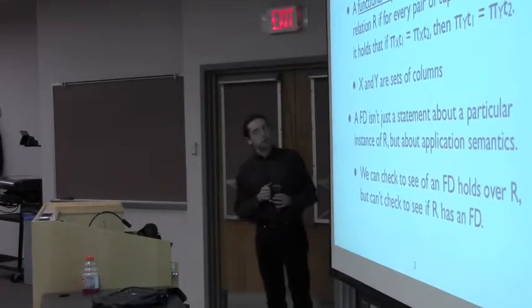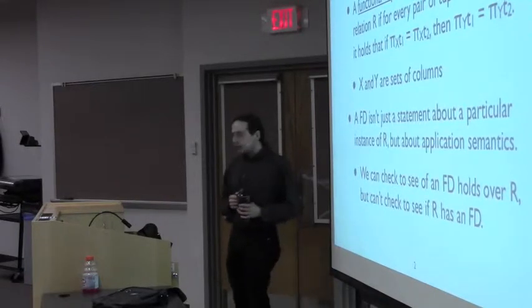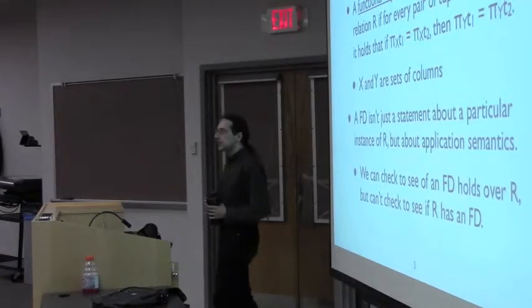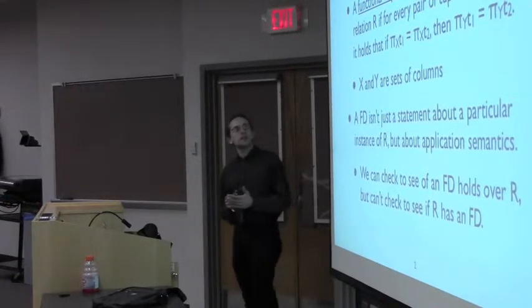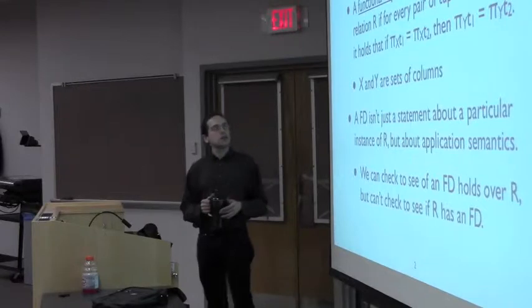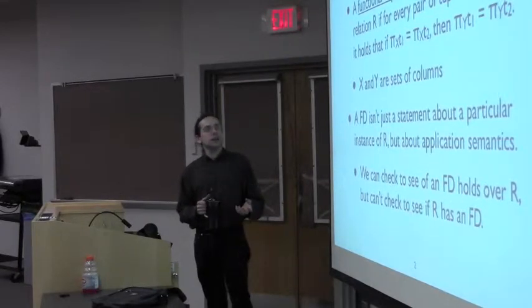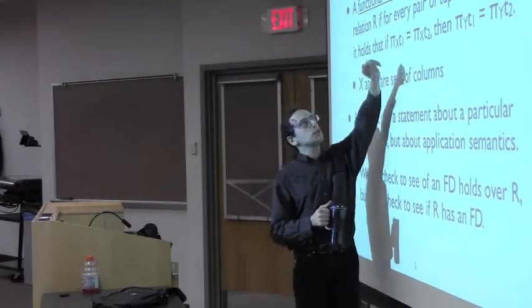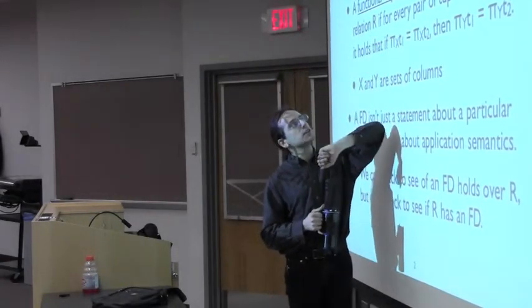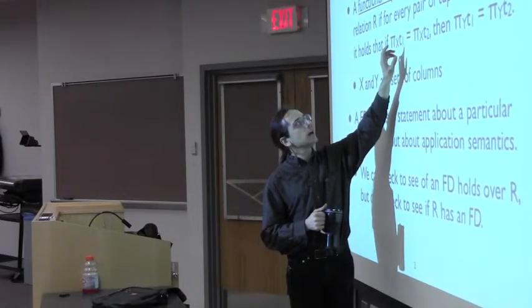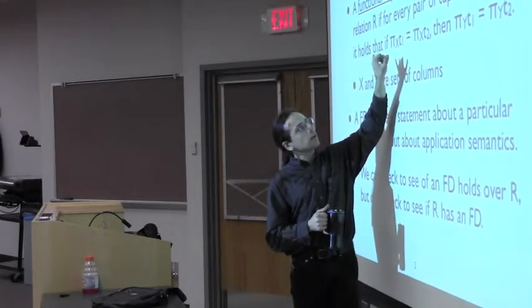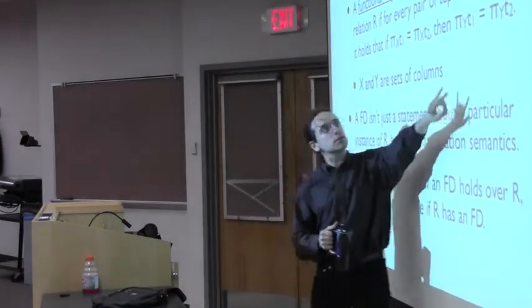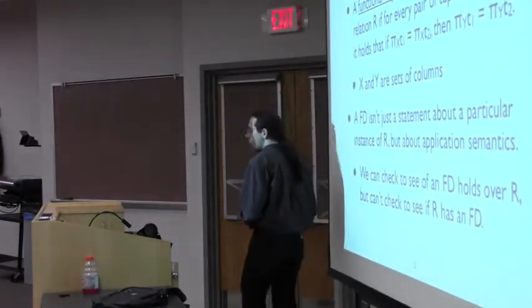Just as a quick recap: the core notion of redundancy came about through functional dependencies. If we know that there is a functional dependency from X to Y, that basically means that if two tuples in any instance of a relation agree on the columns in the set X, then they must also agree on the columns in the set Y.